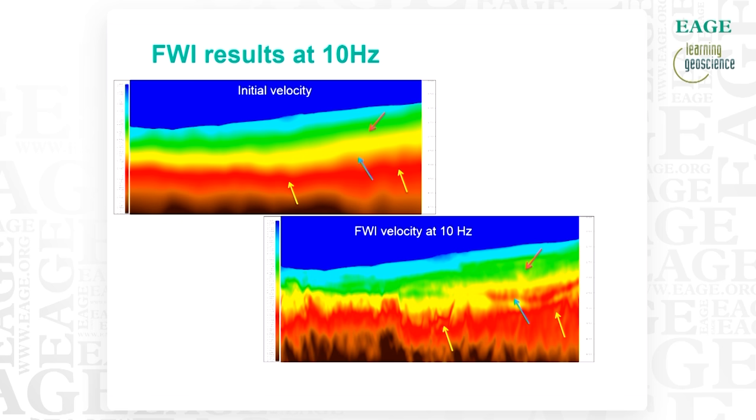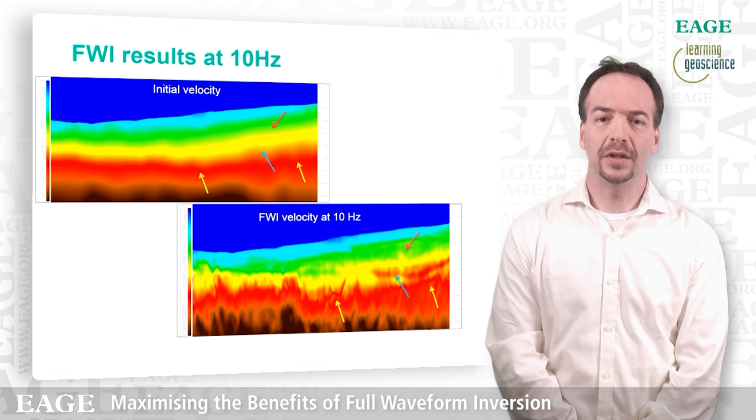The FWI results at 10 Hz: at the top you can see the starting velocity model with the arrows indicating where our geological features are and where we would like to recover them. At the bottom you can see the result of the FWI at 10 Hz. Even at 10 Hz you can start having hints of these geological features coming through — in particular some of the volcanic intrusions. Also the Cretaceous Unconformity is taking shape, and you can see hints as well of sandy bodies in the channels.